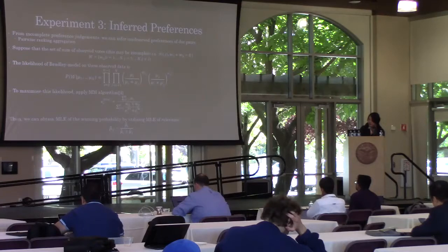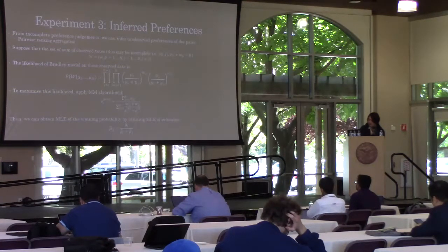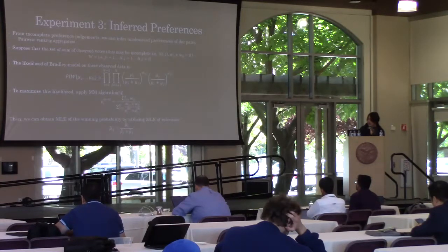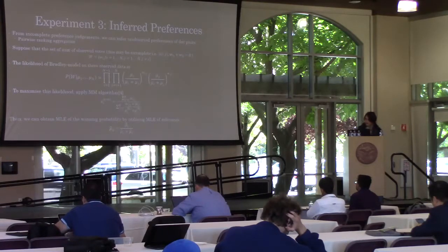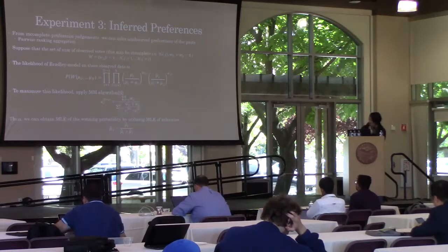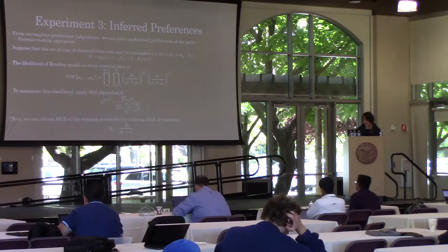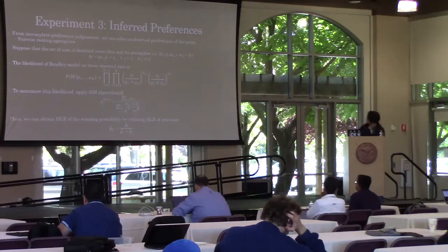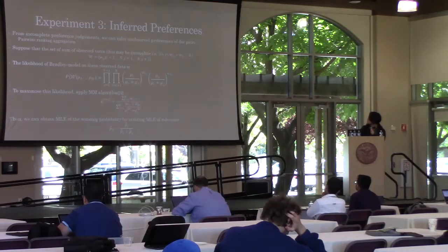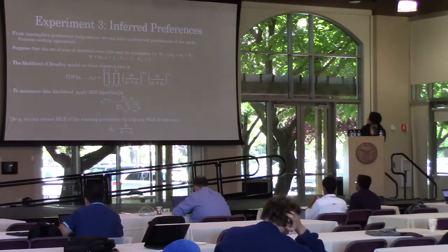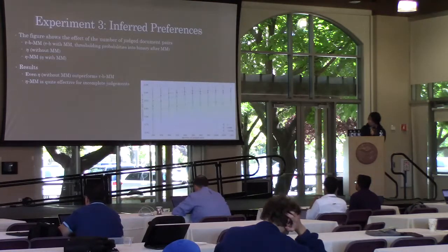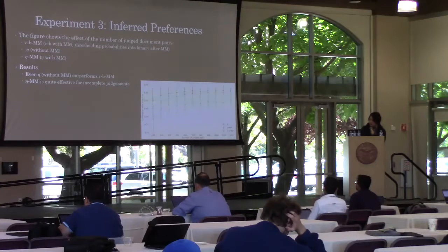Based on observed votes, the likelihood of a Bradley-Terry model is this. By applying MMR algorithm, we can maximize this likelihood function. MMR algorithm can be obtained as a fixed point iteration. Then we can obtain MLE of the winning probability by utilizing MLE of the elements mu.